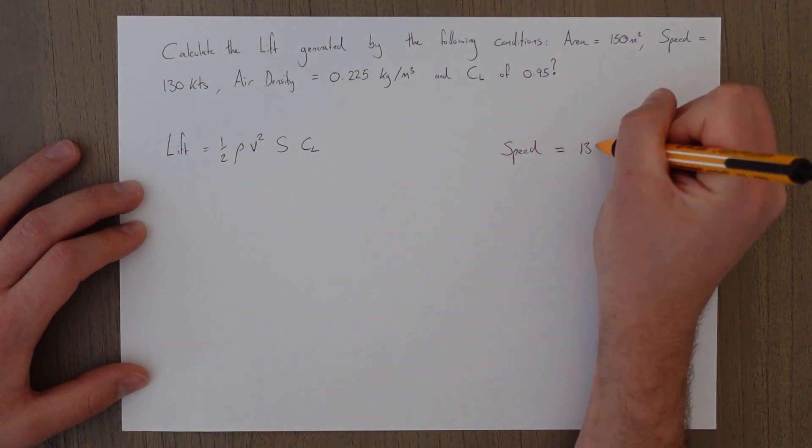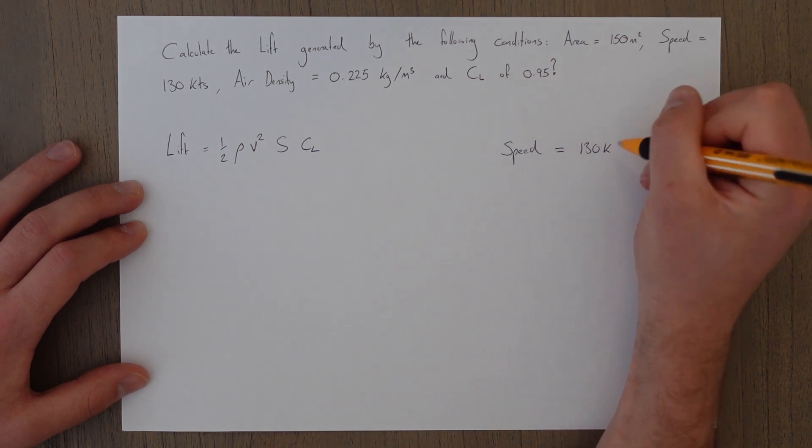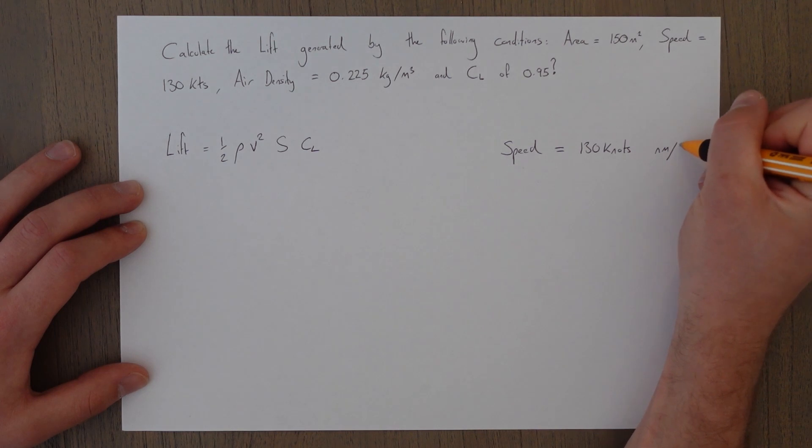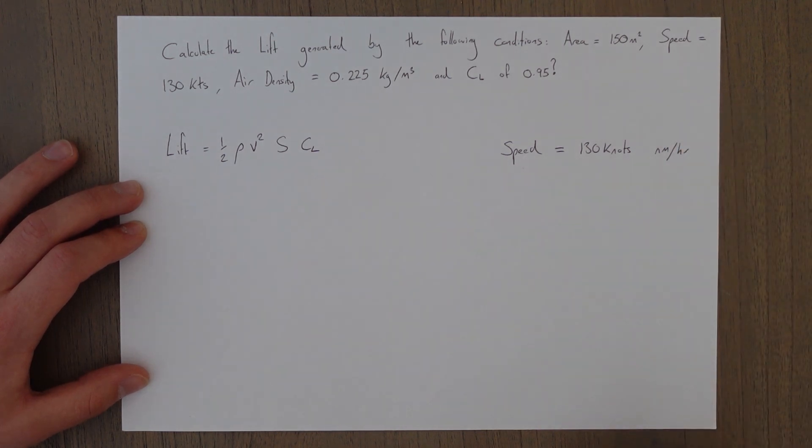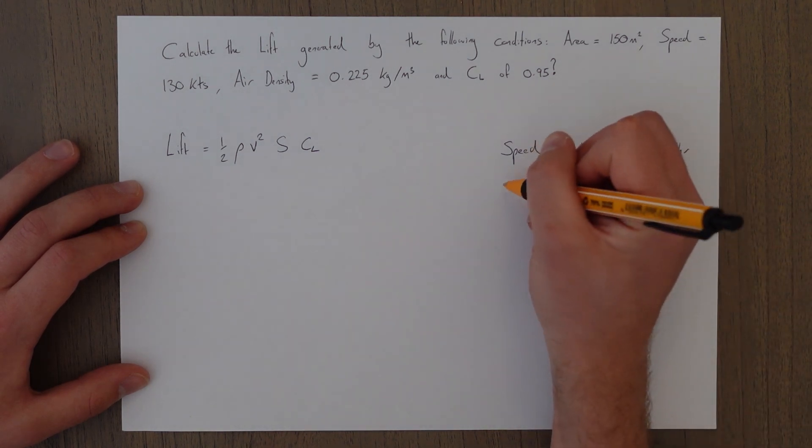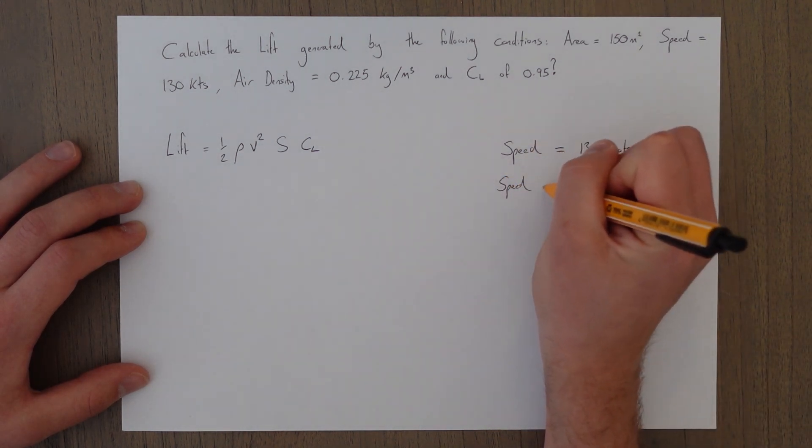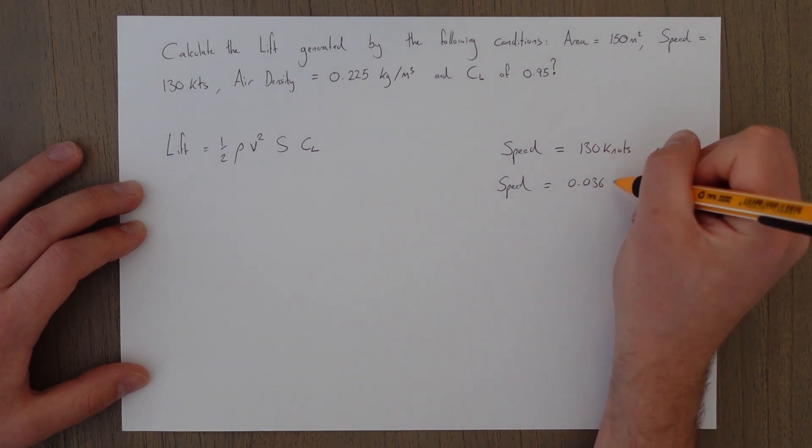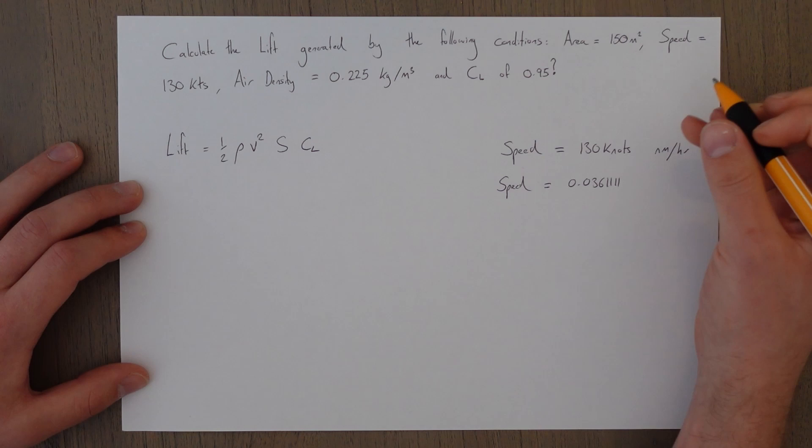So the speed of 130 knots is 130 nautical miles an hour. If we want to find out what it is per minute we would divide by 60, and then for every second we would divide by another 60,